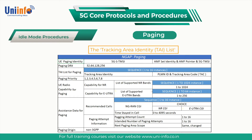However, there are also deployment scenarios where the cells will belong to different tracking areas. For example, a base station which is shared between operators may have one set of cells belonging to a first tracking area for the first operator and another set of cells belonging to a second tracking area for the second operator.